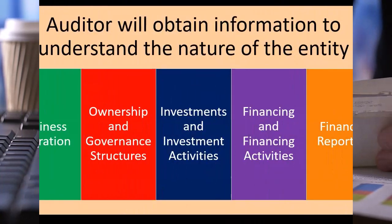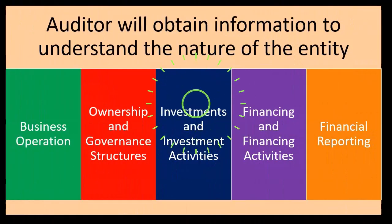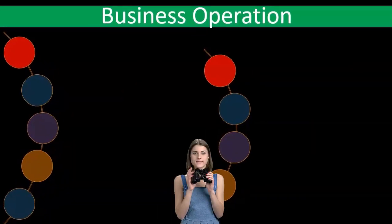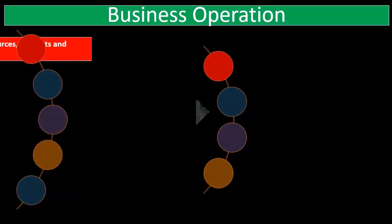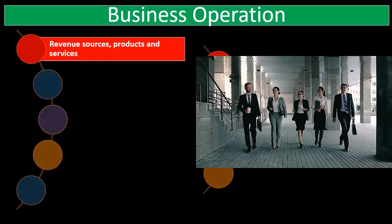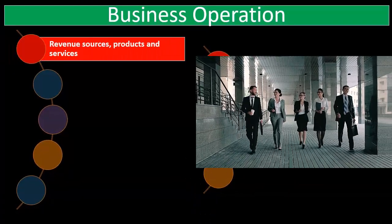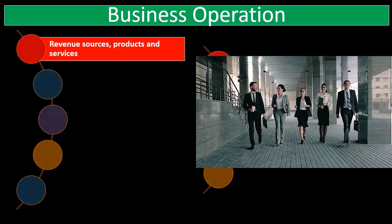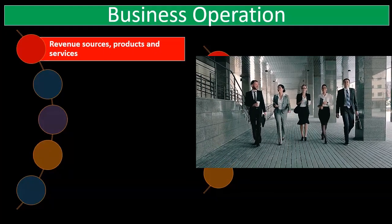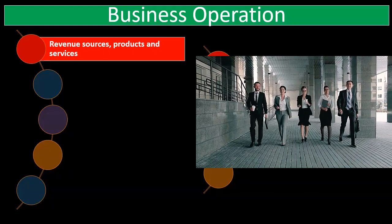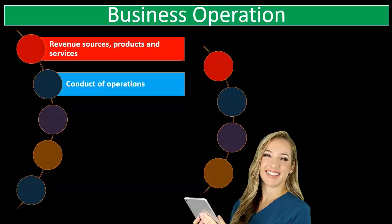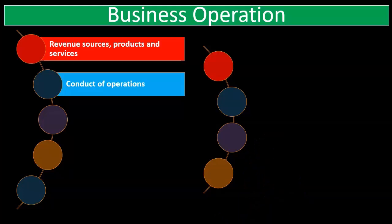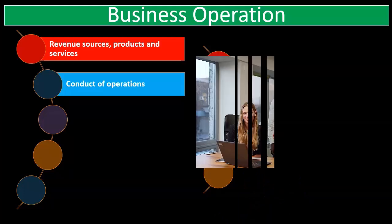We're going to go into a few of these areas in more detail, starting with business operations. The types of things we're going to gather in order to understand the entity include revenue sources and products and services — what they do for revenue and what products and services they have. That's going to be a primary important type of activity when we're trying to understand the nature of the business.